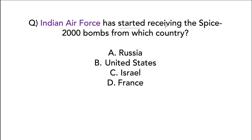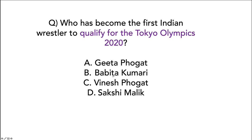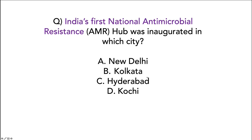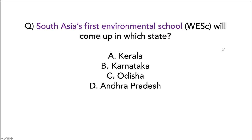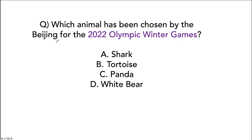The Indian Air Force has started receiving Spice 2000 bombs from Israel — note that 2000 is the name, not the quantity. Who became the first Indian wrestler to qualify for the Tokyo Olympics 2020? She recently defeated world number one Sarah Hildebrandt. India's first national antimicrobial resistance hub was inaugurated in Kolkata by ICMR. South Asia's first environmental school will come up in Coorg, Karnataka.